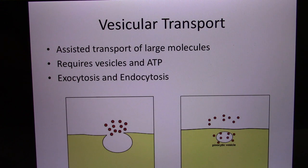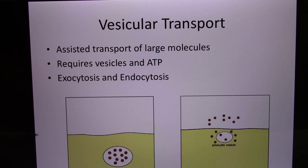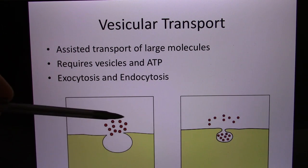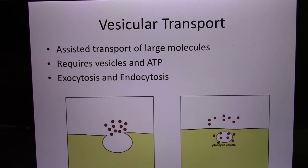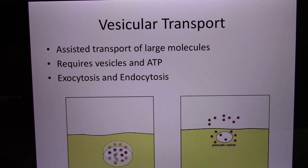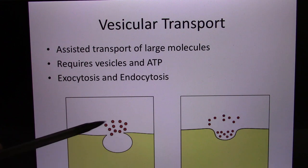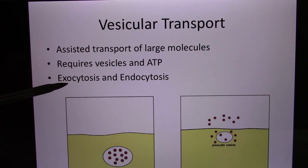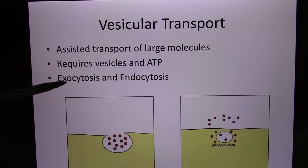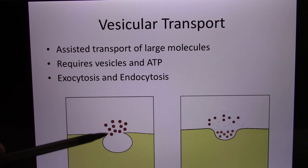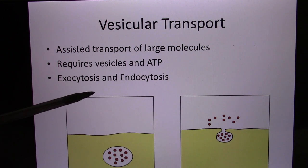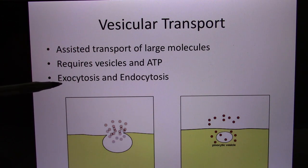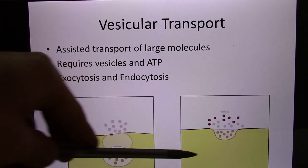Now we talk about the bigger scale: vesicular transport. Molecules that need to move in or move out will create a vesicle — a membrane-created bubble. The molecule they want to move is put inside the bubble in the vesicle. If they move out, we call it exocytosis. For example, neurons releasing neurotransmitters — they put the neurotransmitter in a vesicle and move it out. That's exocytosis.